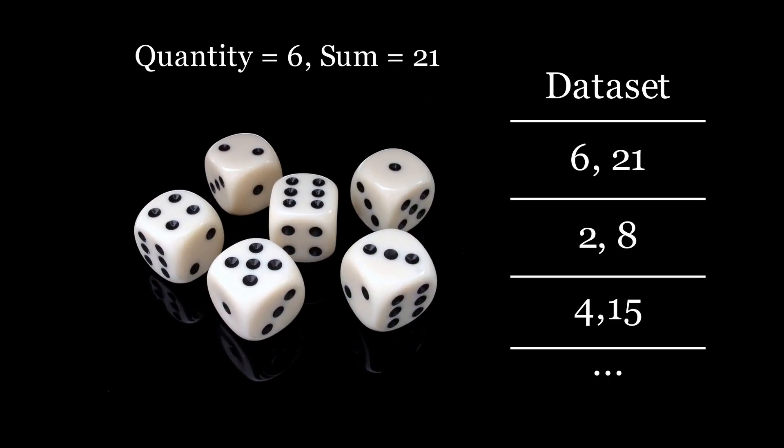For a soft introduction, we use an elementary example. Let us consider a system with one input and one output. The input is the quantity of dice, and the output is the sum of values obtained in a random roll, as shown in this picture. For example, the input is 6 and the output is 21.